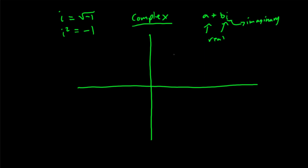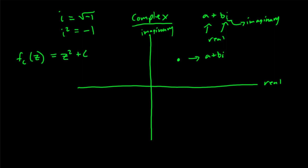You can plot this onto a plane where the real numbers are going to be our x-axis and the y-axis is going to be the imaginary number. You can plot some dot here representing a plus bi. The mathematical function behind the Mandelbrot set is f_c(z), which is defined as z squared plus c. For the Mandelbrot set, we are only concerned where the value z is equal to zero.